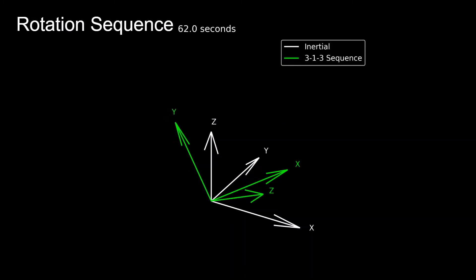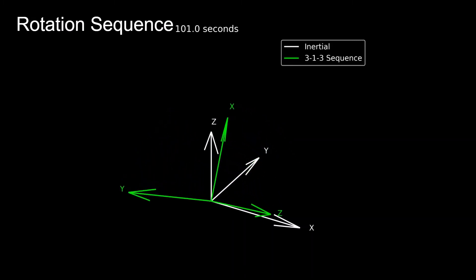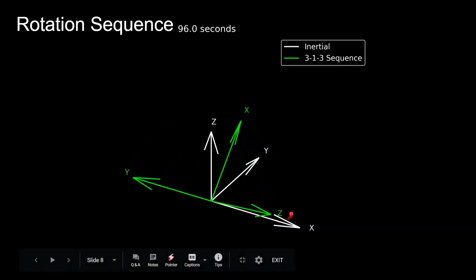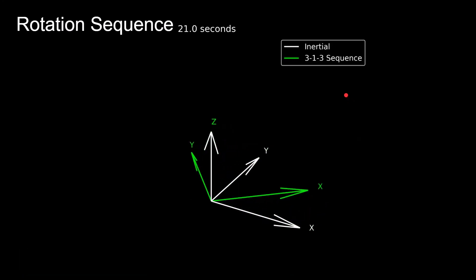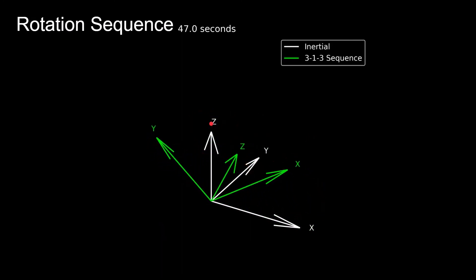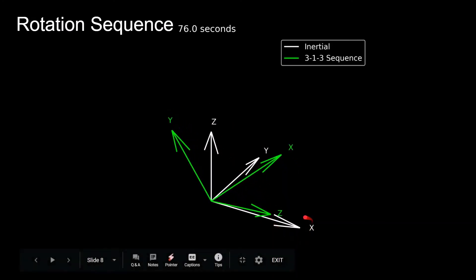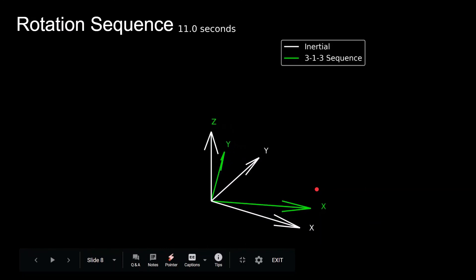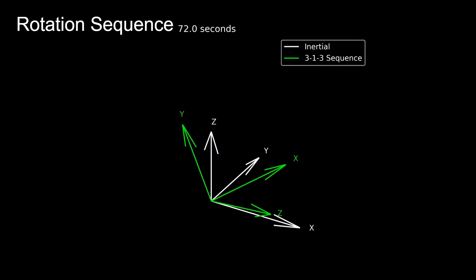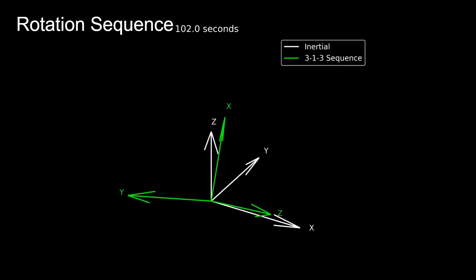Another commonly used sequence, also used in orbital mechanics, is the 3-1-3 sequence: first rotation about Z, second about X, and third about Z again. Note that these rotations are about body-fixed axes, so the first Z rotation is about the inertial Z axis, but the third rotation is about a new Z axis pointing in a different direction in 3D space. This is a sneak peek — the Euler angles video coming next will cover this in much more detail.